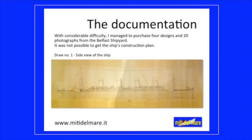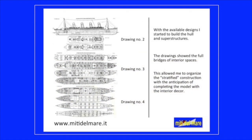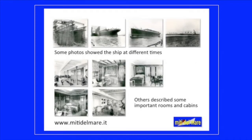The Documentation. With considerable difficulty, I managed to purchase 4 designs and 20 photographs from the Belfast shipyard. It was not possible to get the ship's construction plan. With the available designs I started to build the hull and superstructures. The drawings showed the full layouts of interior spaces, which allowed me to organize a stratified construction with the anticipation of completing the model with interior decor. Some photos showed the ship at different times; others described some important rooms and cabins.